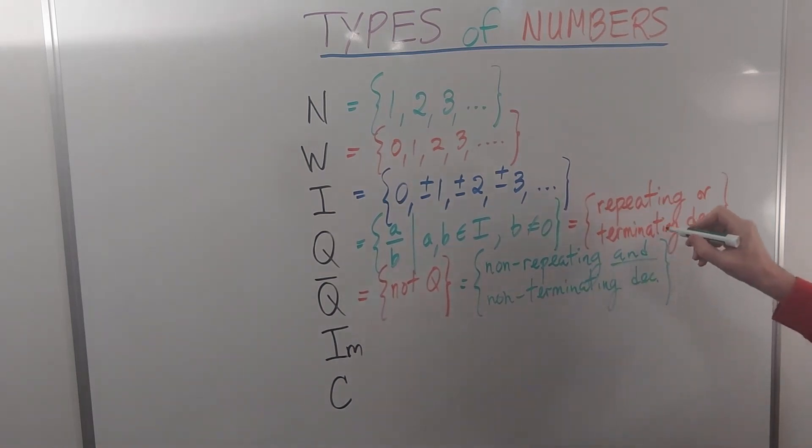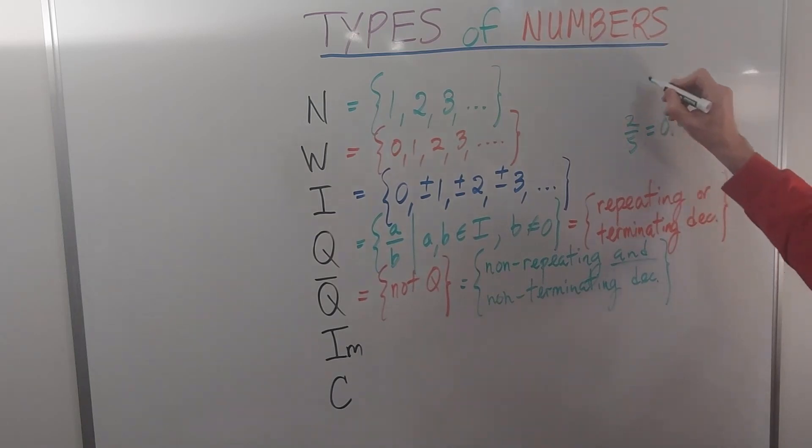So for example, if you have 2 fifths, that's 0.4, that's a terminating decimal. Whereas if you have 2 thirds, that's 0.666 repeated, indicated with the bar on top of the 6, that's a repeating decimal.